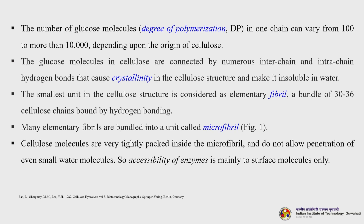The smallest unit in the cellulose structure is the elementary fibril, a bundle of around 30 to 36 cellulose chains bound by hydrogen bonding. Many elementary fibrils are bundled into a unit called a microfibril. Cellulose molecules are very tightly packed inside the microfibril and do not allow penetration of even small water molecules, so enzyme accessibility is mainly restricted to surface molecules only.